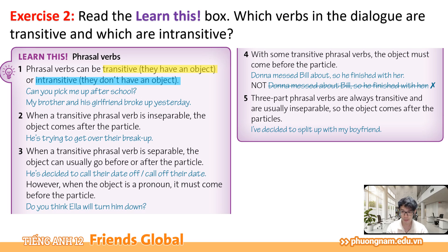Chúng ta cùng xem hai ví dụ nhé. 'Can you pick me up after school?' — phrasal verb 'pick up' được dùng với tân ngữ 'me', nên đây là ví dụ của ngoại động từ transitive phrasal verb. 'My brother and his girlfriend broke up yesterday.' — ở sau cụm động từ 'broke up' không có tân ngữ, chỉ có 'yesterday' là trạng từ chỉ thời gian. Cho nên 'broke up' là nội động từ, intransitive phrasal verb.